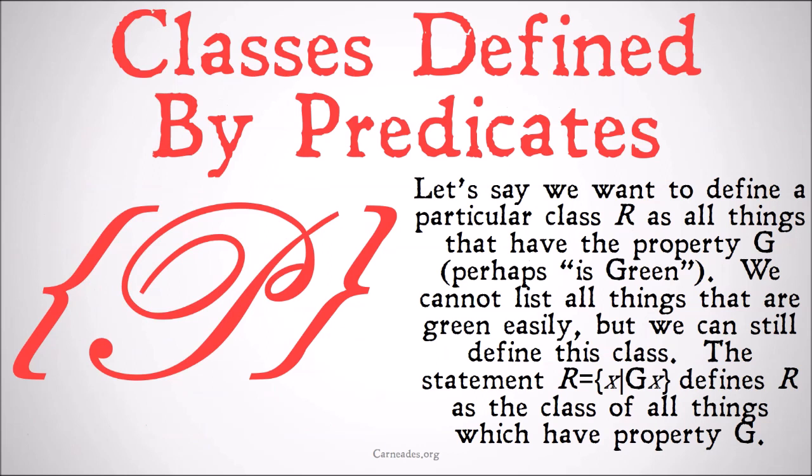First, let's take a look at classes defined by predicates. Let's say we want to define a particular class R as all things that have the property G. Perhaps G means 'is green.' We cannot easily list all the things that are green, but we can still define this class. The statement R is equal to the set of X-bar GX defines R as the class of all things which have the property G.